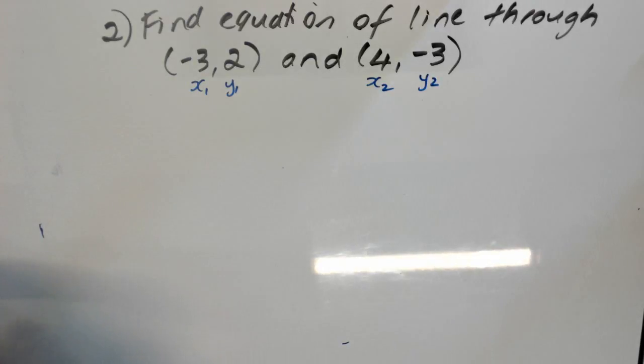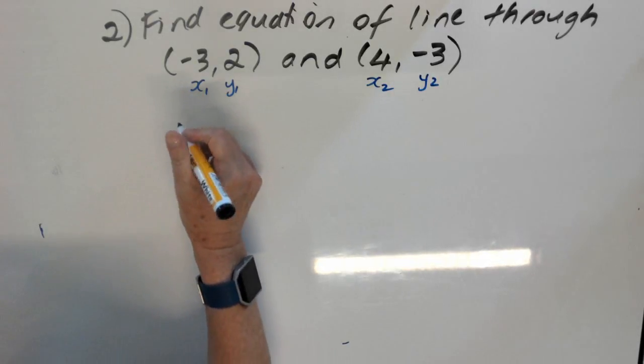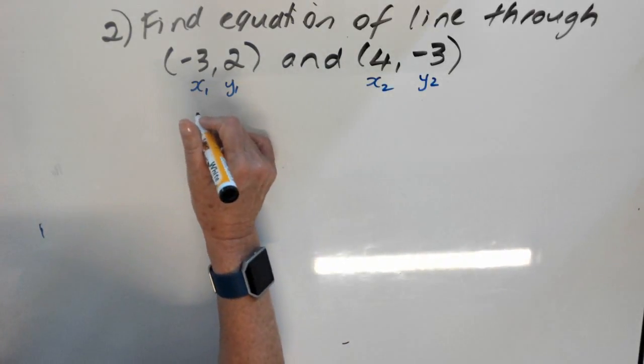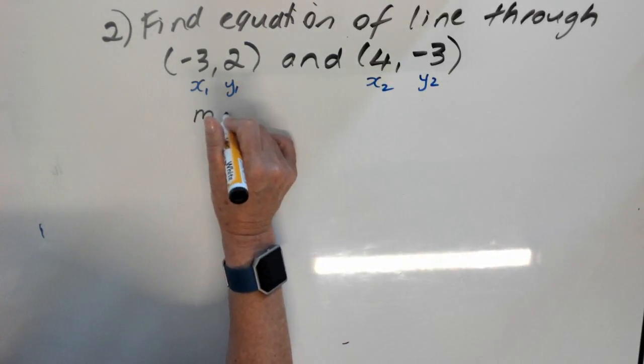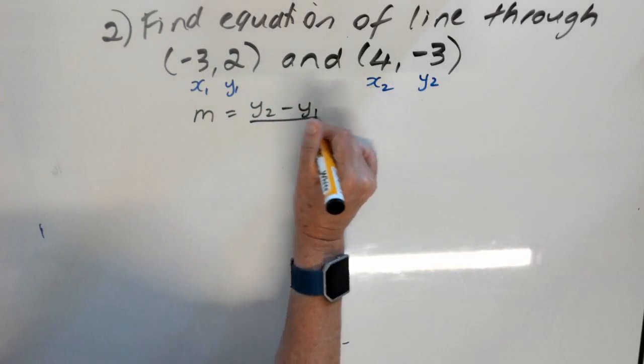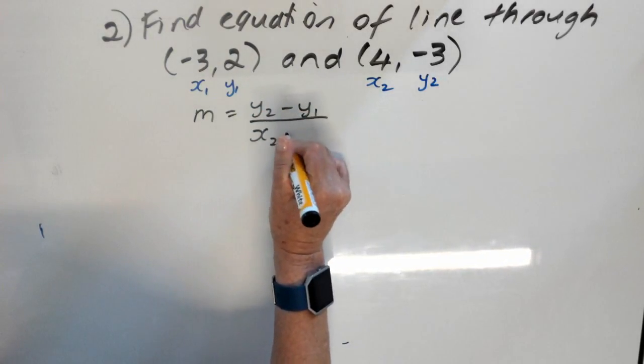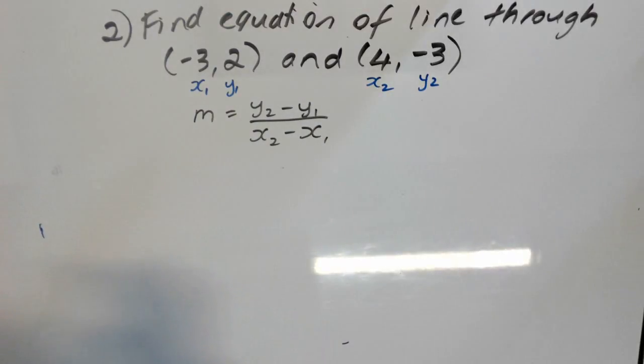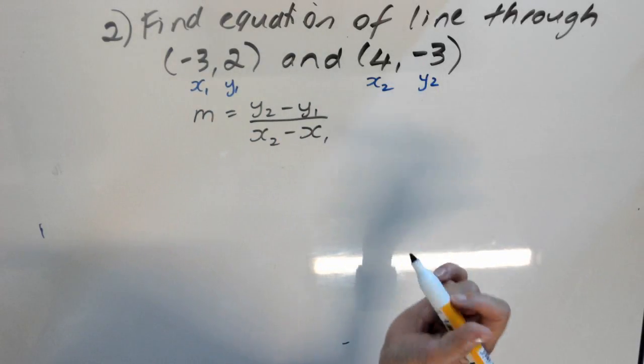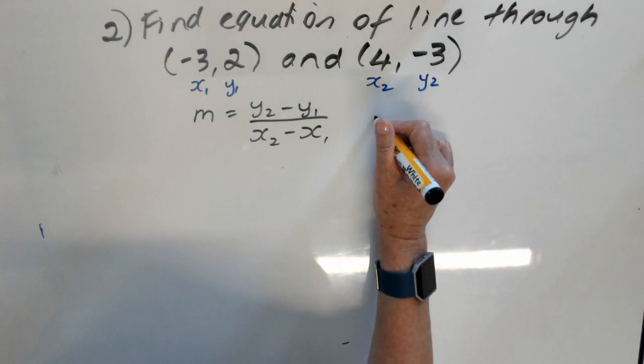Then, we remember our equation for gradient, because the gradient is the first thing that we need to find. Our gradient is y2 minus y1 divided by x2 minus x1. So, what we're going to do is we're going to use that and the points that we have, and we're going to work out the gradient.